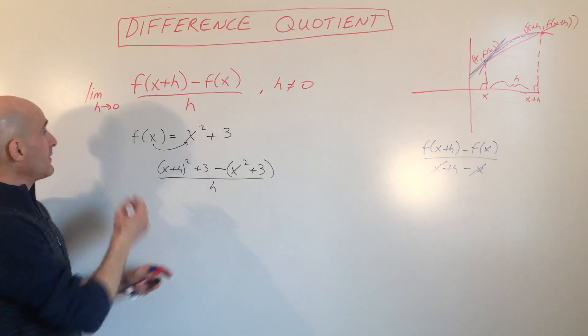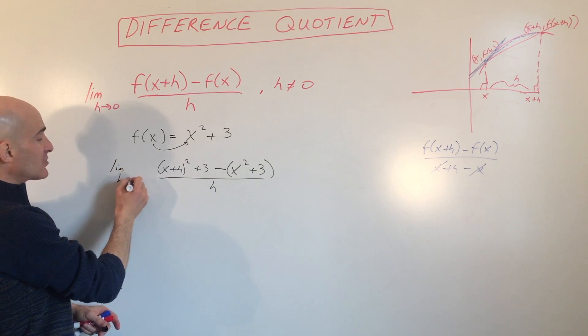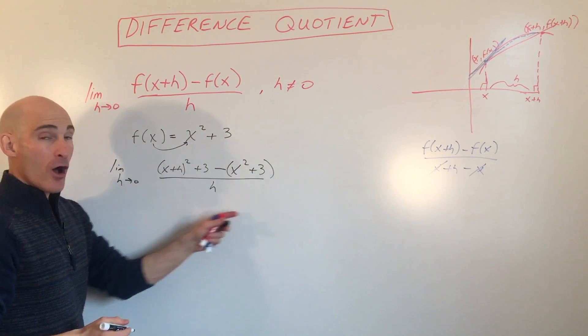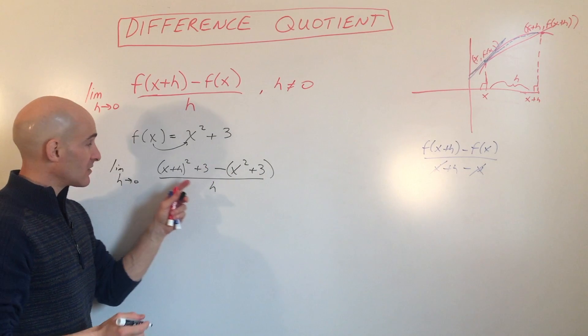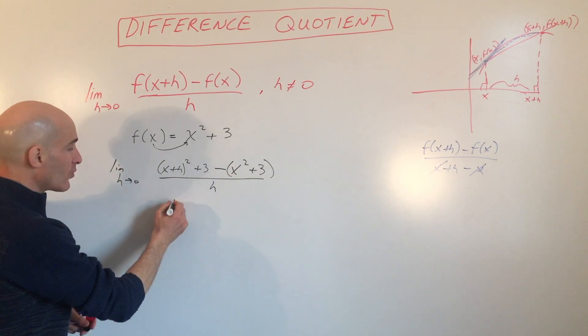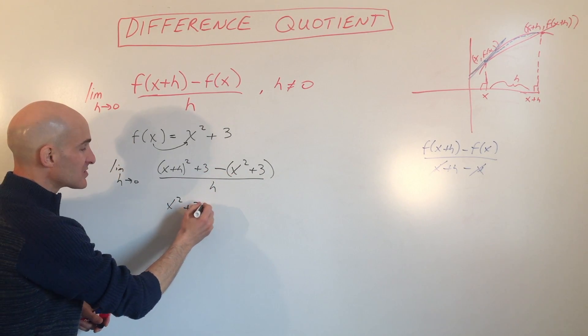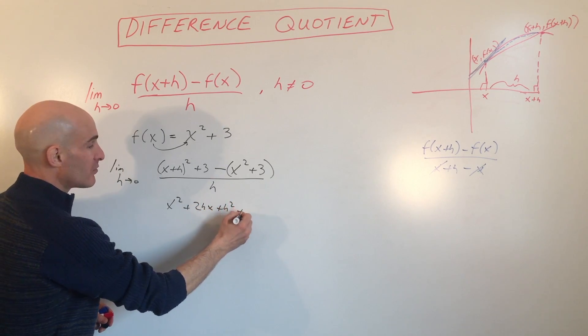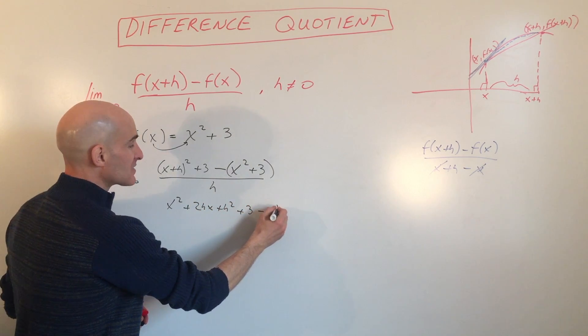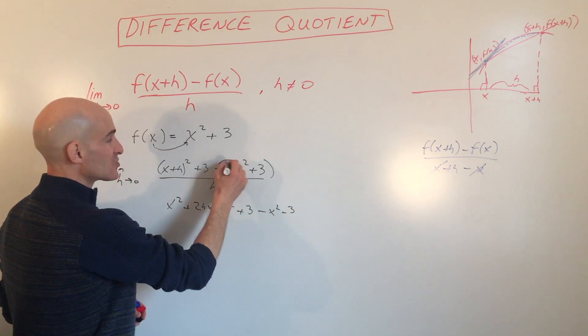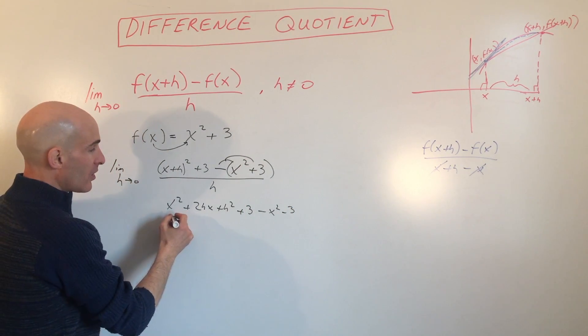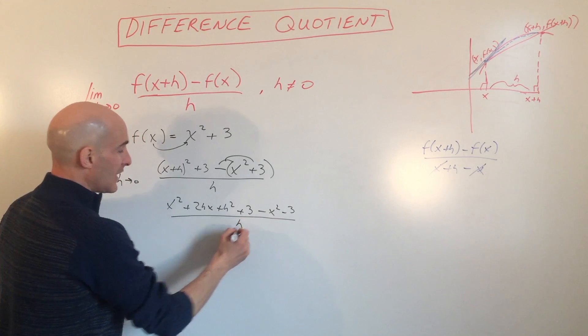And then this is the limit as h approaches zero. Now we just do some arithmetic and simplify this down. We get x² + 2hx + h² + 3, minus x² minus 3, because you have to distribute the negative, all divided by h.